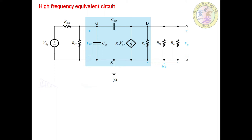In order to proceed with the determination process, we will have to replace the MOSFET by its high frequency model, as shown in figure A here. This is also known as the high frequency amplifier equivalent circuit. In this equivalent circuit you can observe that the C_GD and C_GS capacitances are present, because we have to consider how the gain is going to be influenced by all these internal capacitances.